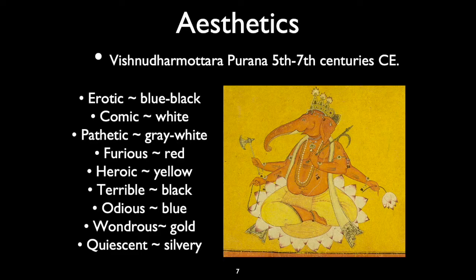The idea of Rasa and Bhava comes into every aspect of every art, with an attempt to communicate the mood or feeling of an art object through these basic emotions. For example, a picture of Ganesh depicted in gold evokes wonder — he is a spectacle and amazing to behold. The color of the painting enhances our feelings toward the deity. These connections between feelings, emotions, and colors became codified in the 5th and 7th centuries CE and carried on down to the present day.